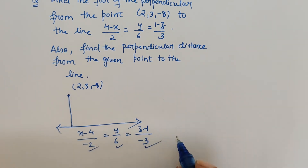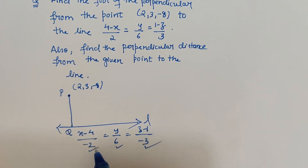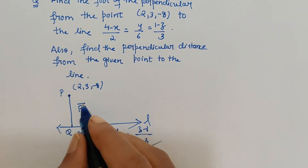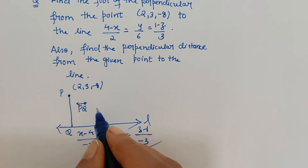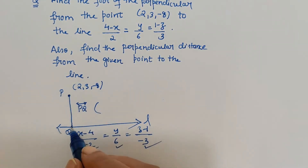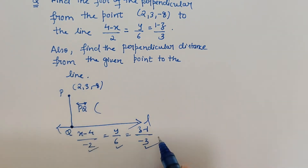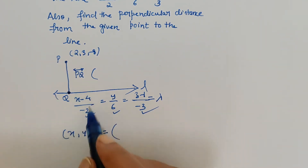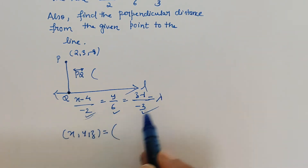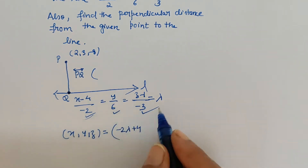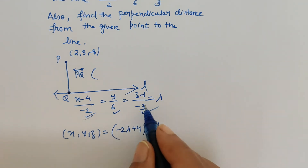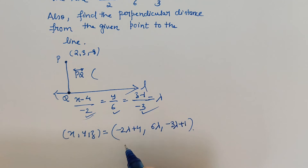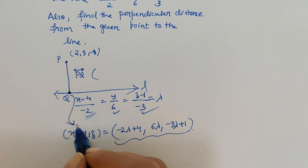The denominator gives the direction ratio of the line L, which is (-2, 6, -3). Let point P be (2, 3, -8) and Q be an arbitrary point on the line. In parametric form, the coordinates of Q are: x = -2λ + 4, y = 6λ, z = -3λ + 1. So Q is (-2λ + 4, 6λ, -3λ + 1).